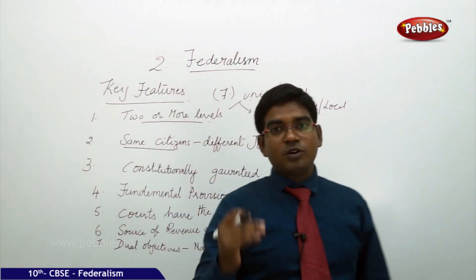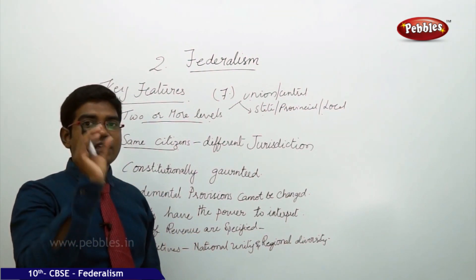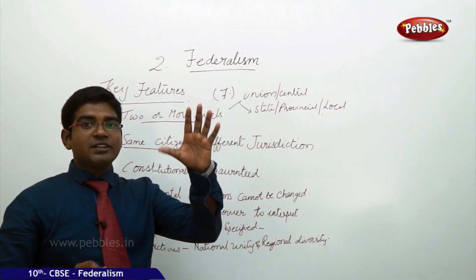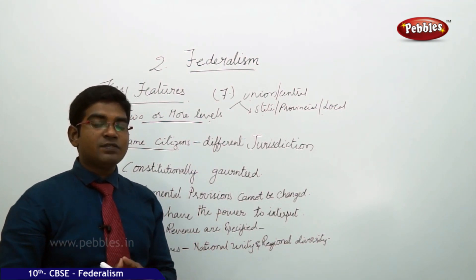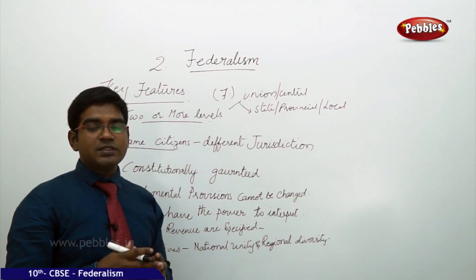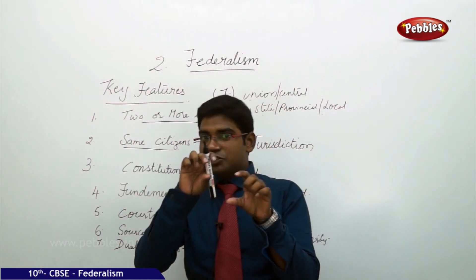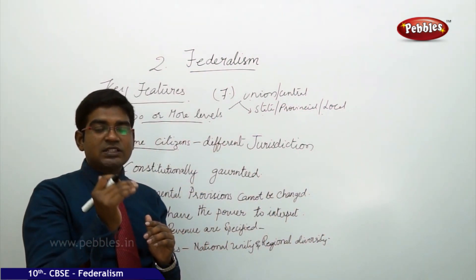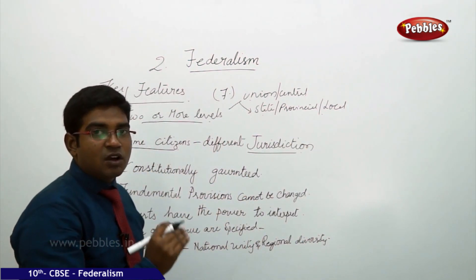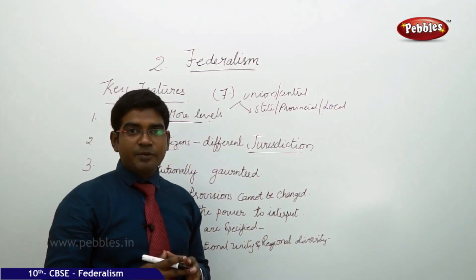The same citizens are governed for various issues which also have different jurisdictions. For example, for a passport, one needs to get it from the union government as it comes under the Ministry of External Affairs, which issues it after getting clarification from the respective state of residence. Similarly, state governments issue ID cards, driving licenses, and PAN cards. Some subjects fall under the union list, some under the state list — this differentiation of powers and subjects dealt by different government setups is known as jurisdiction.